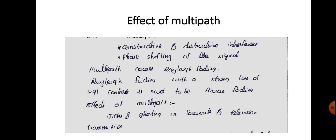Next, let us see what is the effect of multipath. Due to the multipath phenomenon, at the receiver side the signal will be received after constructive or destructive interference. There may also be phase shifting in the received signals. Sometimes multipath causes Rayleigh fading. Due to the multipath phenomenon, the received signal strength may be reduced, and that is called fading.